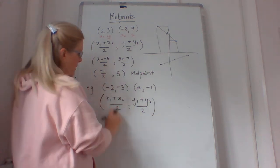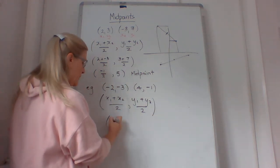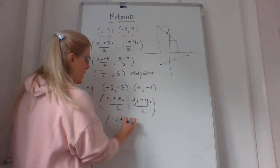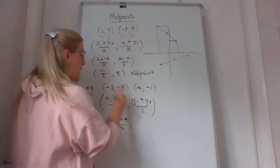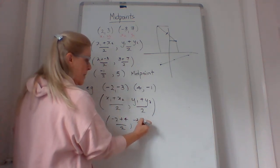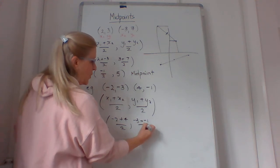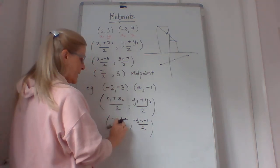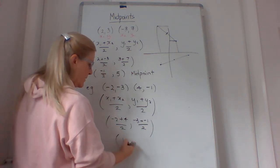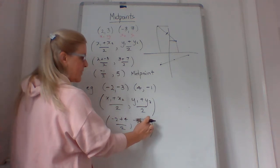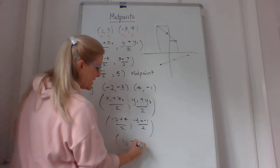And when we put them in, we go (-2 + 4)/2, and (-3 + -1)/2. So we get 2 over 2 is 1, and negative 3 plus negative 1 is negative 4 over 2, which is negative 2.